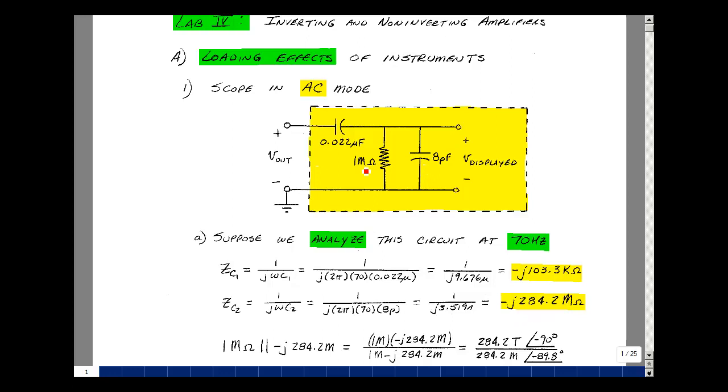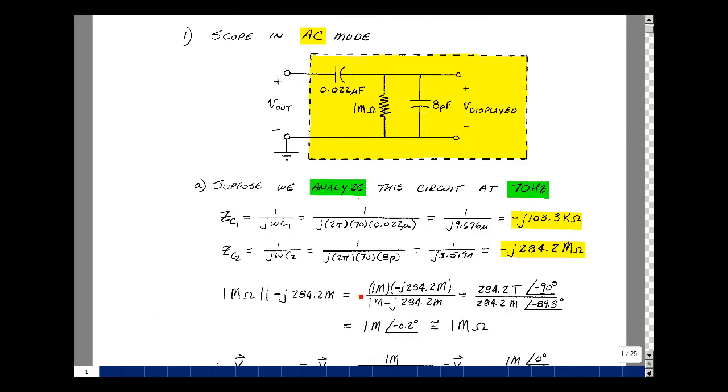Now that 8 picofarads is in parallel with 1 megaohm, let's find the parallel combination. It's going to be the product over the sum. The product of these two terms is 284.2 times 10 to the 12th, and the angle will be minus 90 degrees. The sum is going to be dominated by the much larger imaginary part, so take the square root of the sum of the squares, it's roughly just equal to that value.